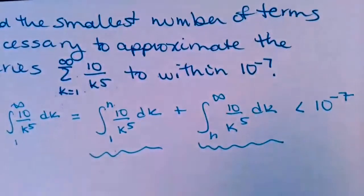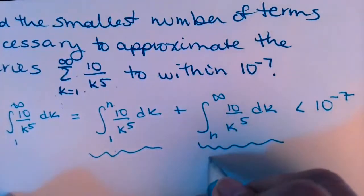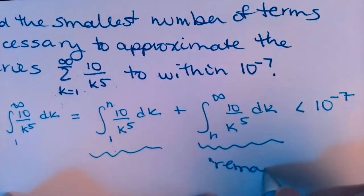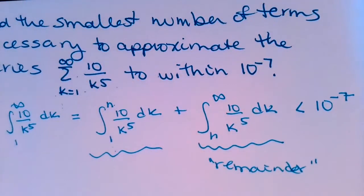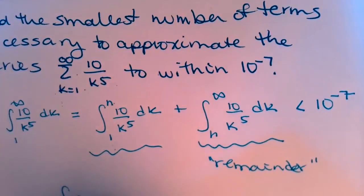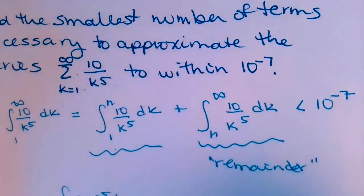So what we want to do is take this remainder, find the antiderivative, and then figure out for what values of n is this last part less than 10 to the negative 7. So what do I have? I have 10k to the negative 5 dk from n to infinity. So it's an improper integral.